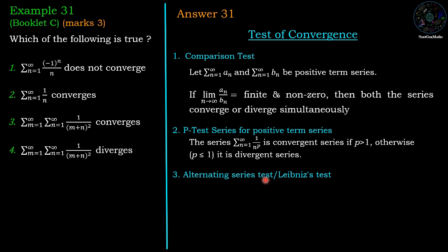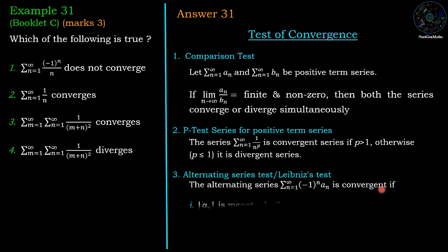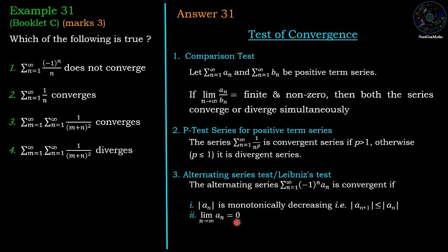Third test: the alternating series test or Leibniz test. If the series is an alternating series, that means sigma n=1 to infinity of (-1)^n a_n, it is convergent if |a_n| is monotonically decreasing — that means |a_{n+1}| ≤ |a_n| — and limit n tends to infinity of a_n equals 0. If these two conditions are satisfied, then the series is convergent.